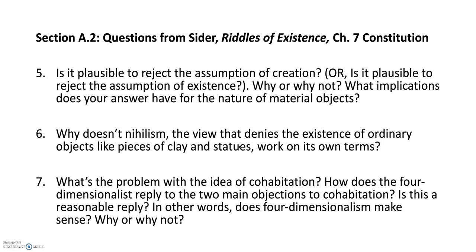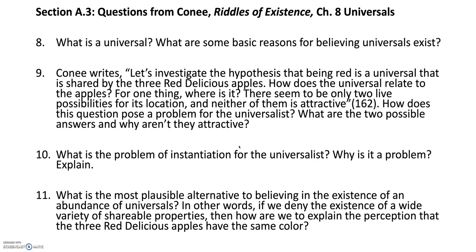There are two other questions in section 2. Section 3 has four questions on chapter 8, Universals, by Connie in Riddles of Existence. First question: What is a universal? What are some basic reasons for believing that universals exist? In question 9, I actually give you a quote from Connie: 'Let's investigate the hypothesis that being red is a universal that is shared by the three red delicious apples. How does the universal relate to the apples? Where is it? There seem to be only two live possibilities for its location, and neither of them is attractive.' That's from page 162. So the question is: how does this pose a problem for the universalist? What are the two possible answers, and why aren't they attractive? You could conceivably skip all of these questions, or answer one, two, or all four of them.